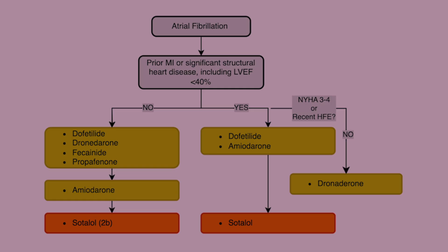Looking at the drug selection algorithm: in AF patients without prior MI or significant structural heart disease, all options are available — most are Class 2A recommendations and sotalol is 2B. In patients with structural heart disease, Class 1C drugs (flecainide and propafenone) are dropped. Dofetilide and dronedarone can still be used when the patient does not have NYHA Class 3 or 4 heart failure or recent heart failure exacerbation. Dronedarone should also be avoided when sinus rhythm has not been restored, as studies show increased mortality in persistent AF. Amiodarone is not the preferred first-line drug — use other options first.